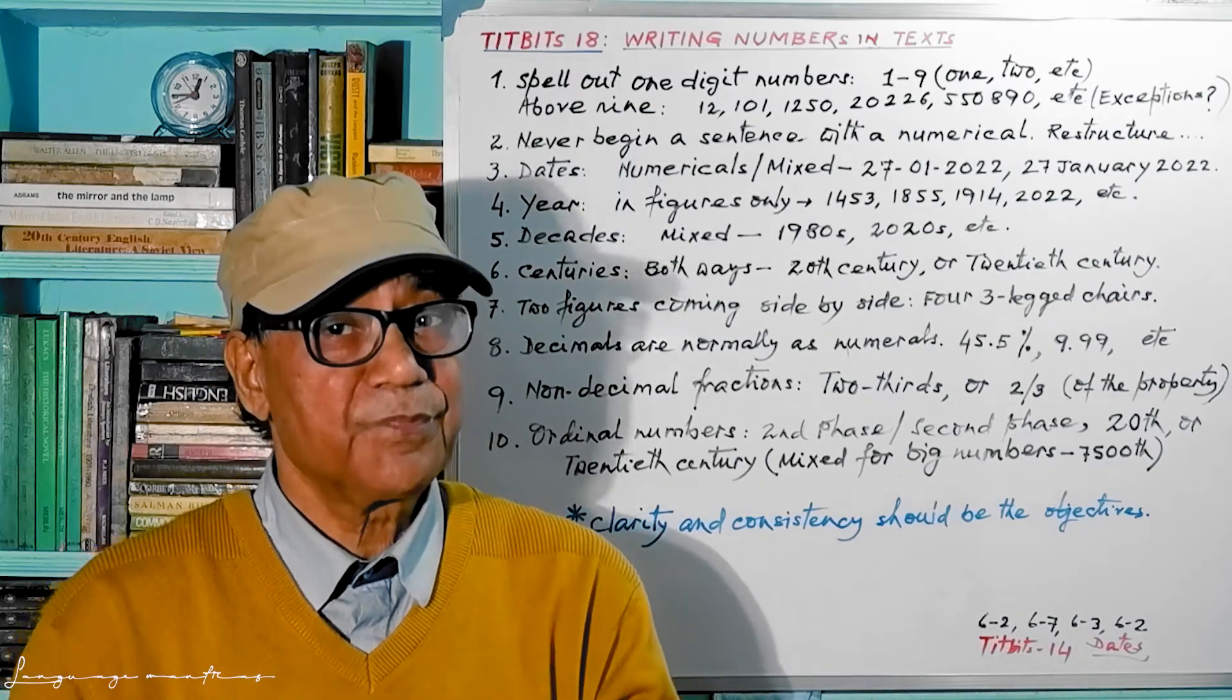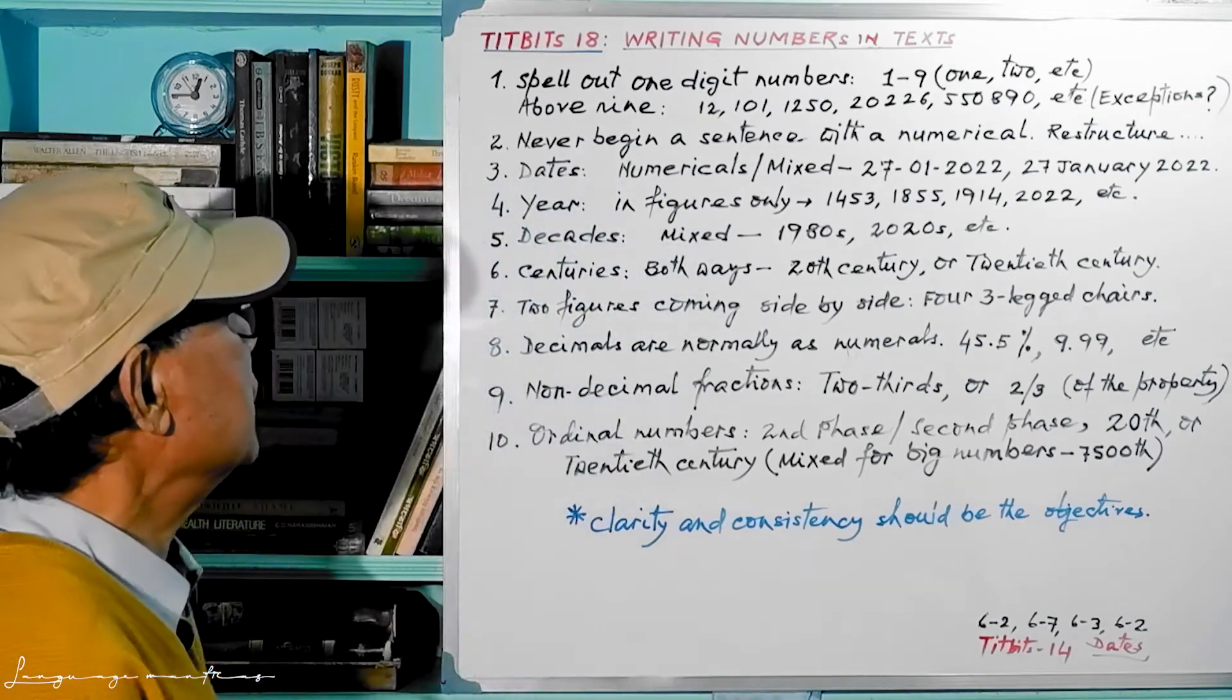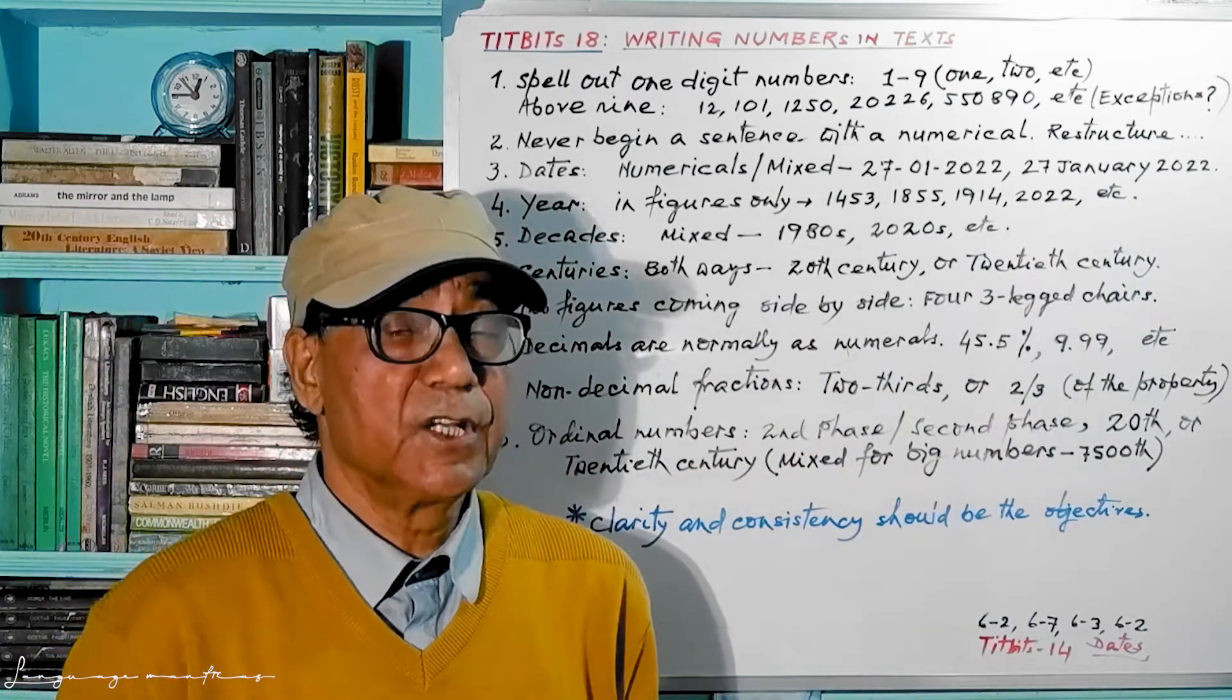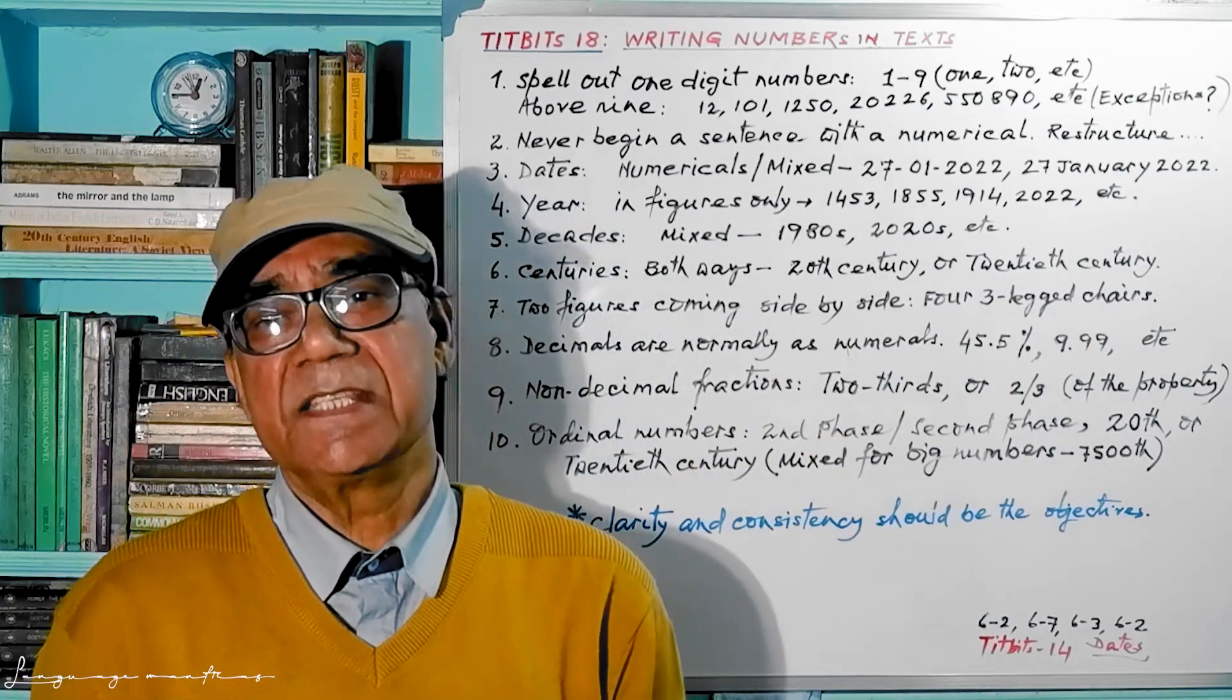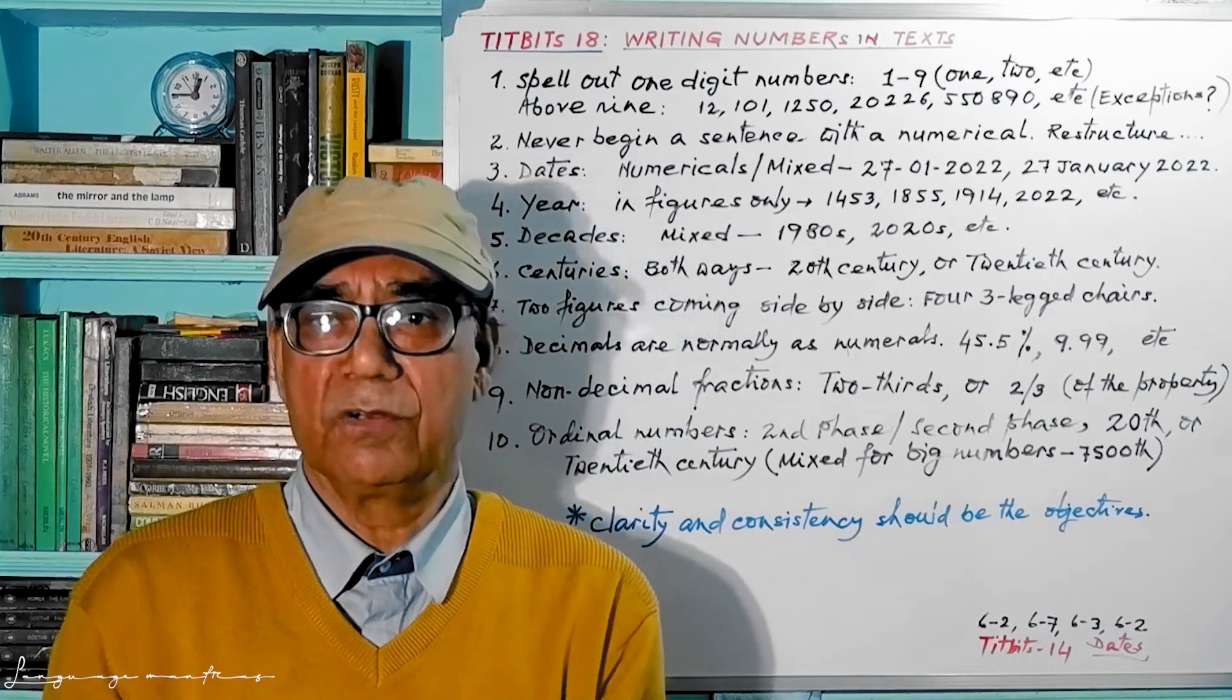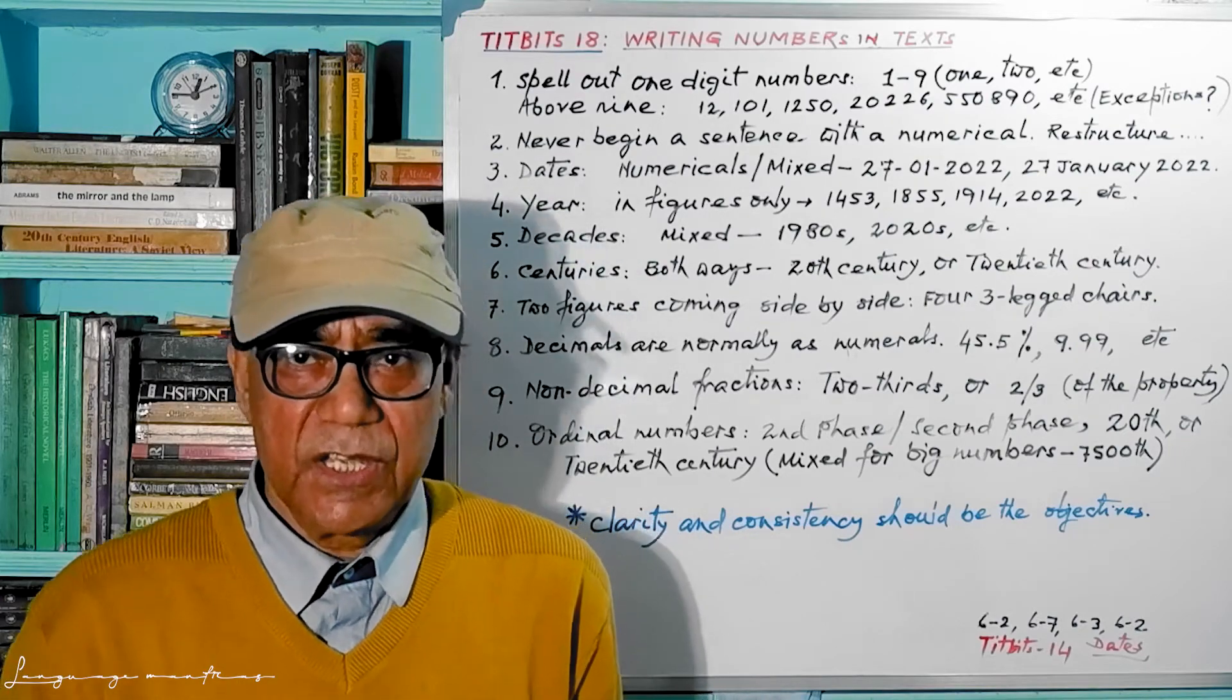Come to the point number two: never begin a sentence with a numerical. Don't say 1889 is the year in which Charlie Chaplin was born. Don't write a sentence like this. Restructure.